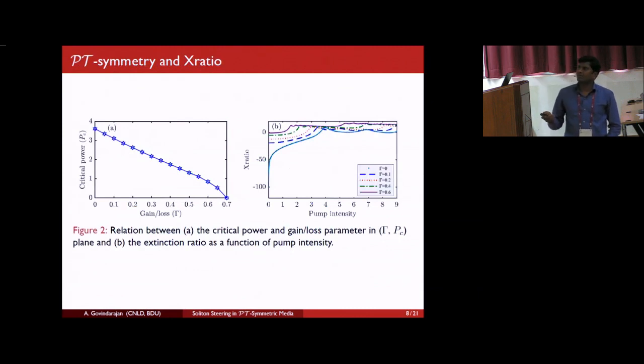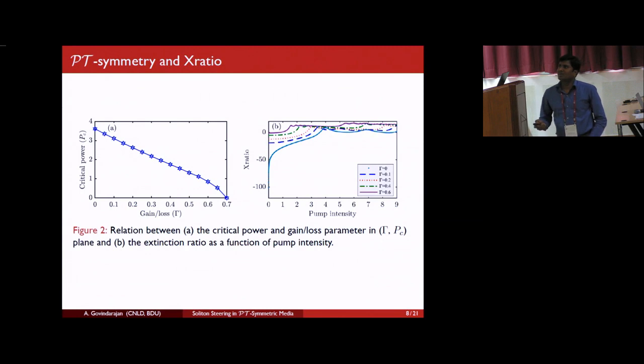We also study the effect of gain and loss parameter as a function of critical power. From this figure, one can clearly observe that on increasing the value of gain and loss parameter, the critical power linearly decreases. In particular, if the gain and loss parameter approaches the singularity, you know that if gamma approaches one, it will lead to singularity conditions. The critical power has been quite remarkably reduced, which will obviously enable the ultra-low power, all-optical soliton switching. The same things have been corroborated in the extinction ratio calculations. This corresponds to in the absence of PT-symmetry, and this one when the PT-symmetry effect is almost 0.6. You will note that the extinction ratio shifts from negative value to some positive value. It's a very good result.